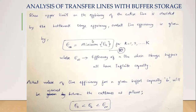The actual value of line efficiency for a given buffer capacity b will be between the two extremes: e0 is efficiency with zero buffer storage, and e-infinity is efficiency with infinite buffer capacity. For any buffer capacity such as 10, 20, or 100, the efficiency will be in between — greater than e0 and less than e-infinity.